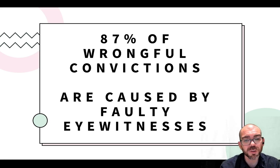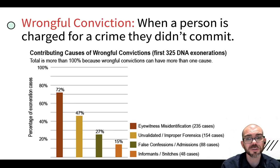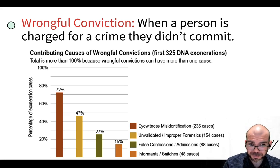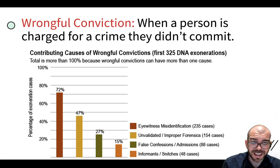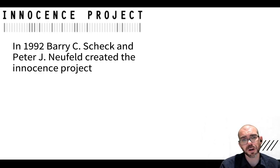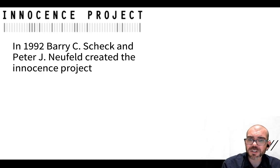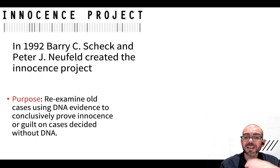Again, 87% of wrongful convictions are caused by faulty eyewitnesses — that's why we have to be methodical with our observations. Looking at this graph, in addition to eyewitness misidentification, invalidated or improper forensics causes a lot of wrongful convictions, as do false confessions and informants telling the wrong information. Because of how high wrongful convictions unfortunately are, a project called the Innocence Project was created and put into action in 1992. The idea is that with the advent of DNA technology, we can now conclusively prove if someone's biological material is associated with the crime or not, without any of the shakiness of eyewitness testimony or crime scene lineups.